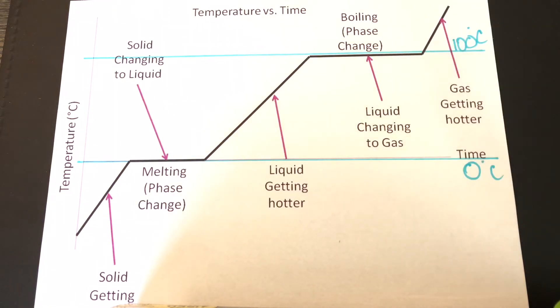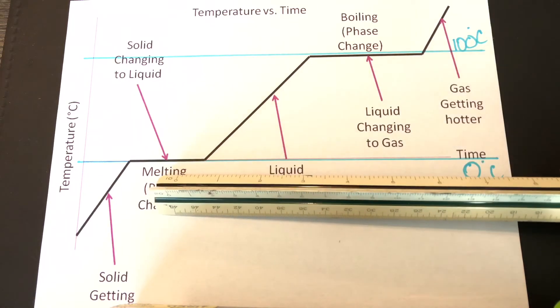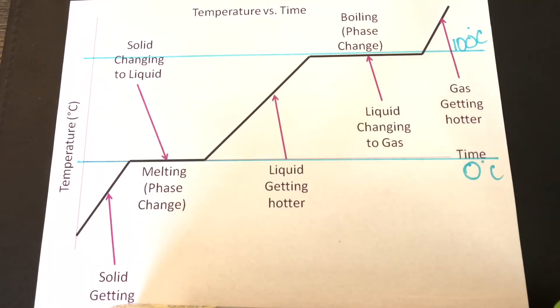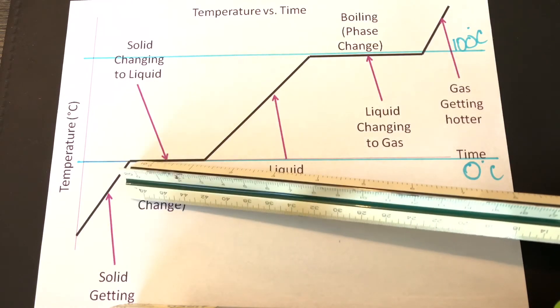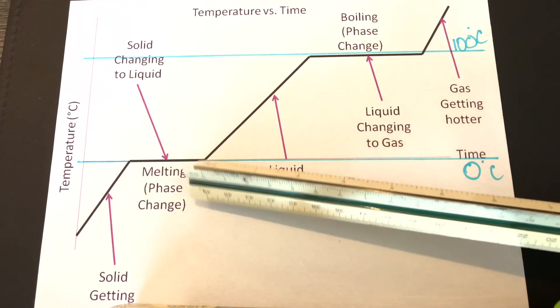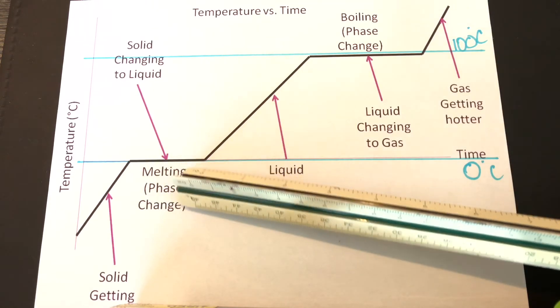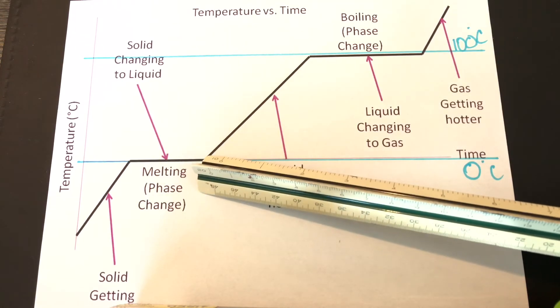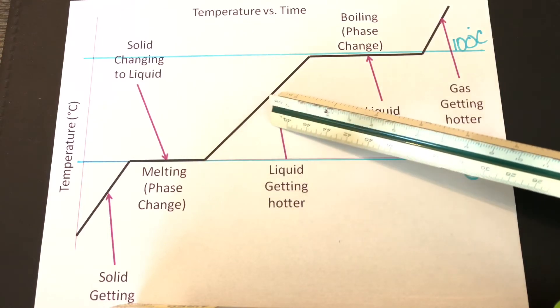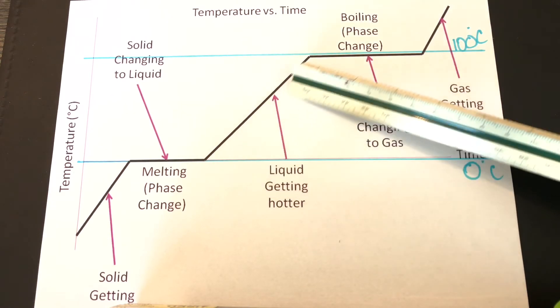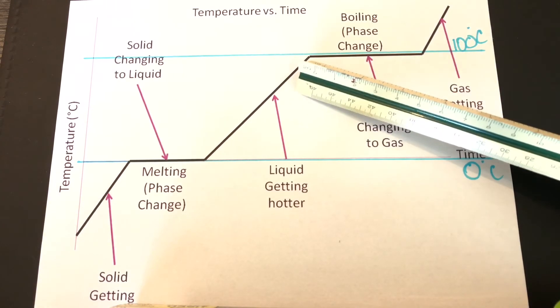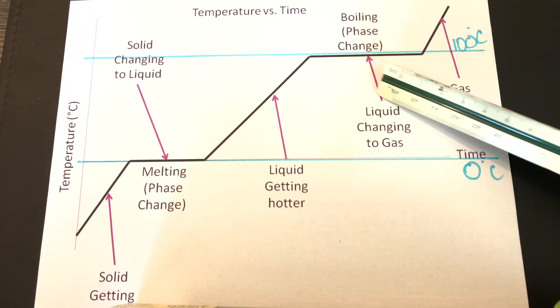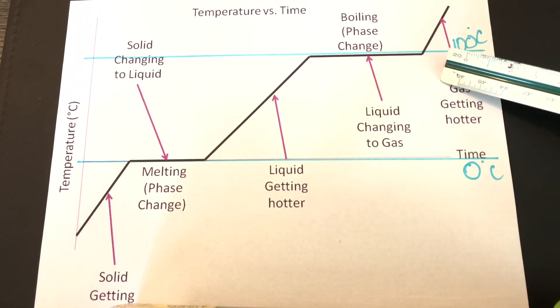Anything below this line over here is going to be a negative number. As the solid is getting hotter, we reach our first phase change. Remember, phase change there is no delta T. Then we begin to increase the temperature where the liquid is getting hotter. Over here on these planes there will be a delta T, so be careful. And then we reach our second and final phase change, and then from there as the gas gets hotter, the temperature will rise again.